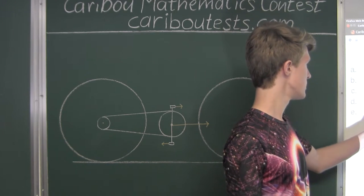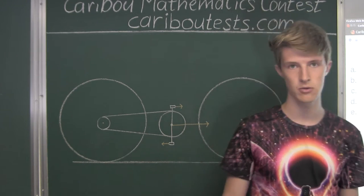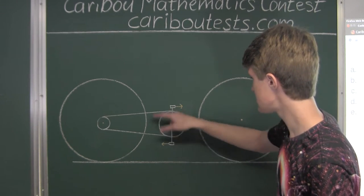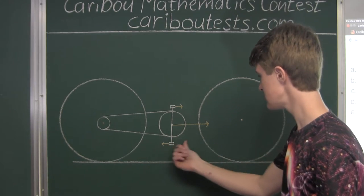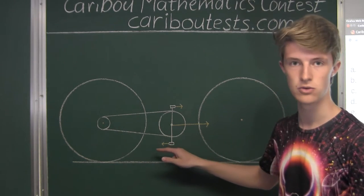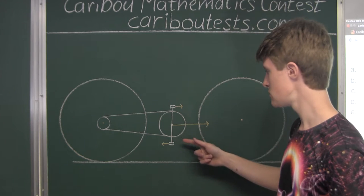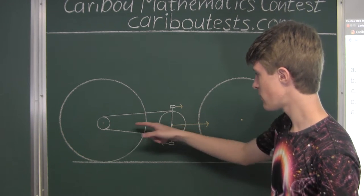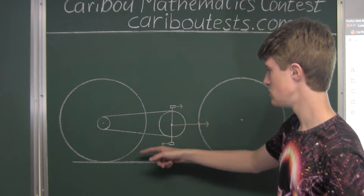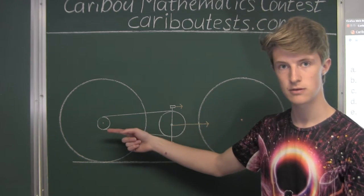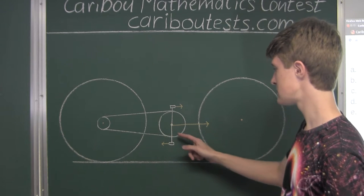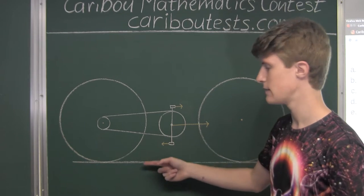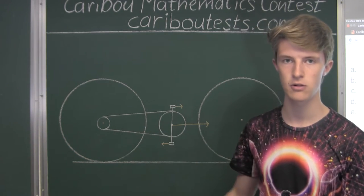For option C, the pedals start turning counter clockwise and the bicycle moves to the left. In this case, the bottom pedal would be going to the right in relation to the bike frame. But the bike frame would be moving much further to the left in relation to the ground. Therefore, when finding the sum of those two vectors, the bottom pedal would actually be moving to the left in relation to the ground when turning counter clockwise.